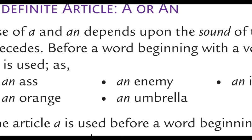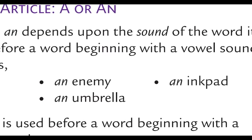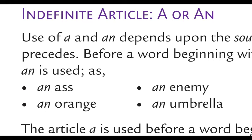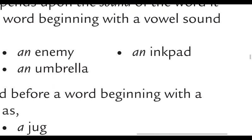'Ass' mein 'aa' sound ka use hai, jo ki ek vowel sound hai. 'Enemy' mein 'e' — ek vowel sound hai. 'Ink pad' bhi ek vowel sound hai. Vowels hain: A, E, I, O, and U — but ye vowels hain, vowel sounds nahin. Vowel sounds aap Hindi language ke vowels se samajh sakte hain: A, aa, E, ee, O, oo, A, I. Agar koi words in sounds se shuru hote hain, to un sabhi ke pehle 'an' ka use kiya jaega. 'Orange' bhi O se shuru ho raha hai, jo ki ek vowel sound hai. 'Umbrella' bhi ek vowel sound se shuru hone wala word hai. The article 'a' is used before a word beginning with a consonant sound — aur jo word consonant sound se shuru hote hain, un sabhi ke pehle 'a' lagaya jaata hai — jaise: a cow, a girl, a pen, a book. Ye chaaron words k, j, p, aur b se shuru ho rahe hain, jo ki consonant sounds hain.